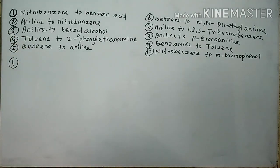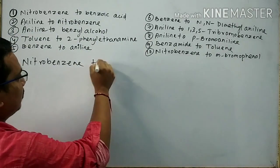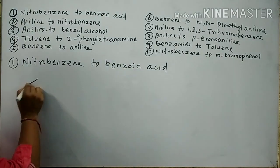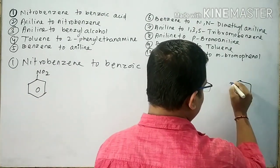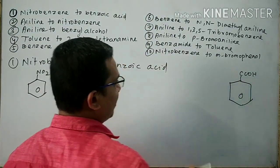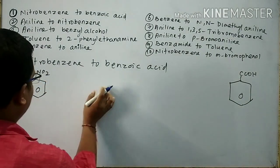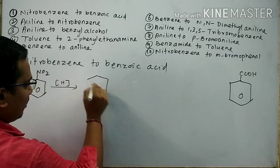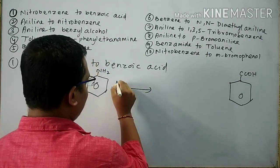Question number 1: Convert nitrobenzene to benzoic acid. The structure of nitrobenzene has a NO2 group, and the structure of benzoic acid has a COOH group. There is an increase in the number of carbon atoms. First, I will convert nitrobenzene into aniline by reduction.